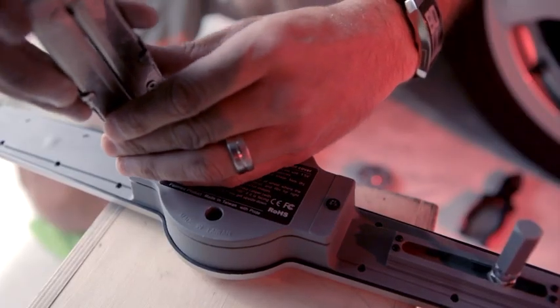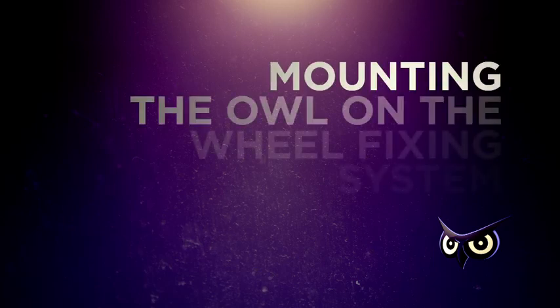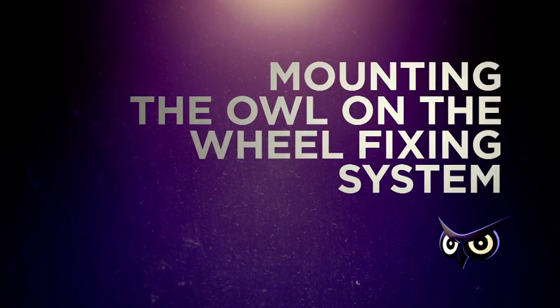Replace the bottom cover and tighten the screws after all the settings are complete. Mounting the OWL unit on the wheel fixing system.